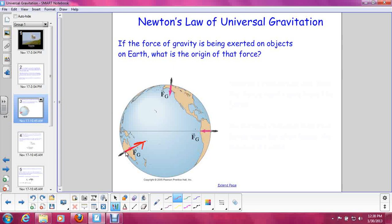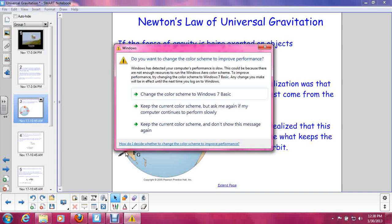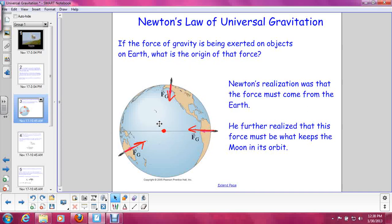As you can see in the drawing, it does not matter where the person is standing on the Earth. Gravity is always pulling in toward the center of the Earth. Why does that happen? Well, it turns out that Newton did a bunch of thought experiments and found out that the force must be coming from the Earth. So gravity is originating from the Earth. And he realized that this force must be what keeps the moon in its orbit. Why doesn't it just fly off into space? It is because of gravity and that gravitational force must originate from the Earth.